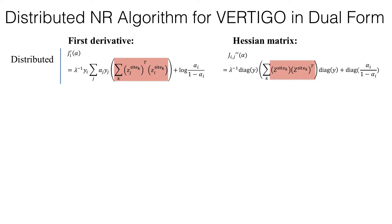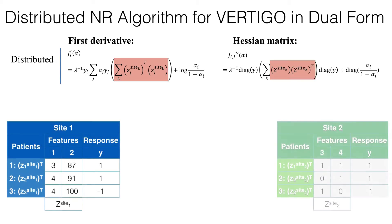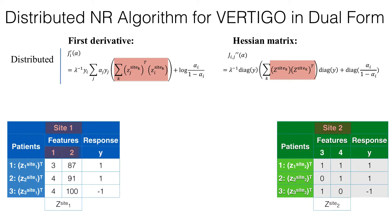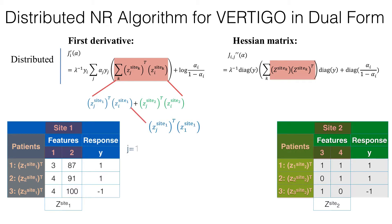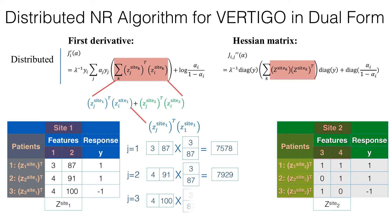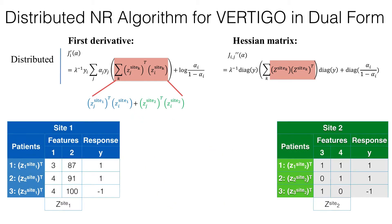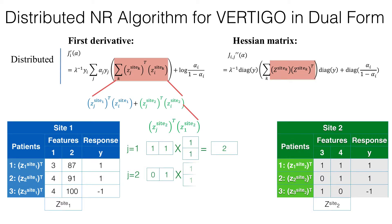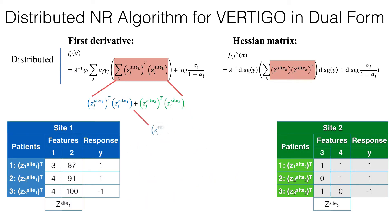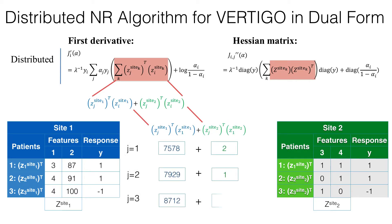Now we will explain the Vertigo algorithm with an example. Suppose we have two sites, where each site has two different features from the same three patients. To compute the first derivative, for i equal to 1 in the first site, we take the inner product between z1 site 1 and zj site 1, for j from 1 to 3. Similarly, for site 2, we can compute the local statistics for i equal to 1 and j from 2 to 3. Then we can aggregate the local statistics from sites 1 and 2 to update the global model, without sharing patient-level data.